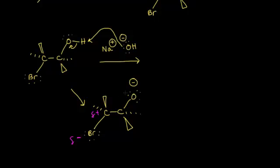If these electrons attack this carbon, that would kick these electrons off onto your bromine. It's an intramolecular Williamson ether synthesis where your alkoxide is the nucleophile in an SN2 type mechanism.